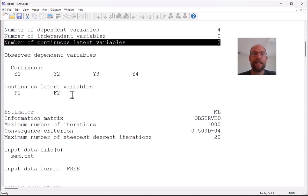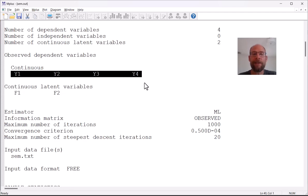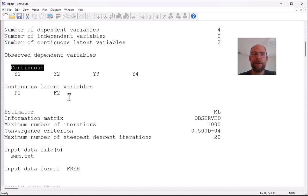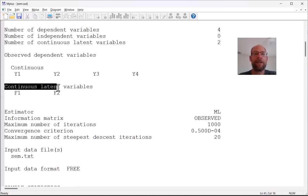The labels of all variables are then also provided so that you can check that you use the correct indicator variables. Here y1, y2, y3 and y4 are our observed dependent variables and by default they are seen as continuous in Mplus and then also the latent variables are continuous and those were labeled f1 and f2.